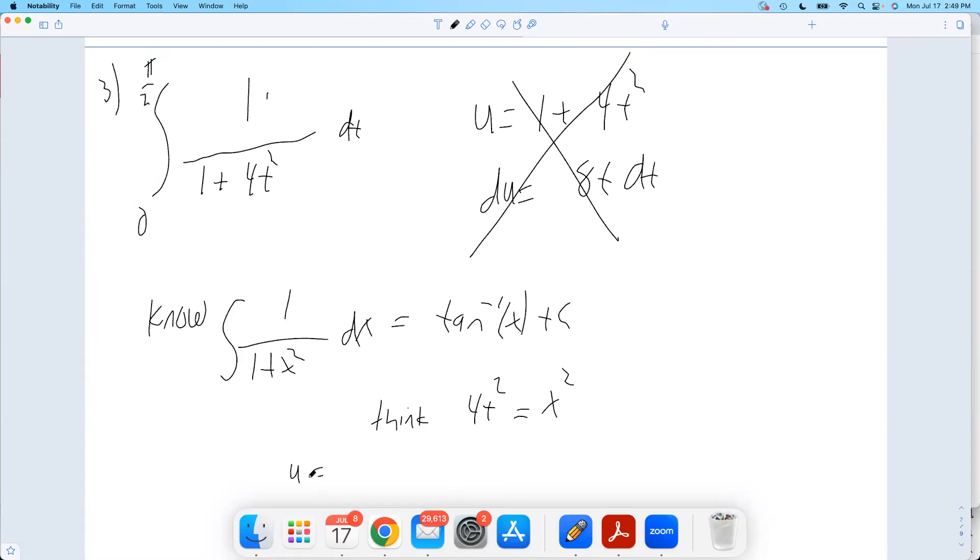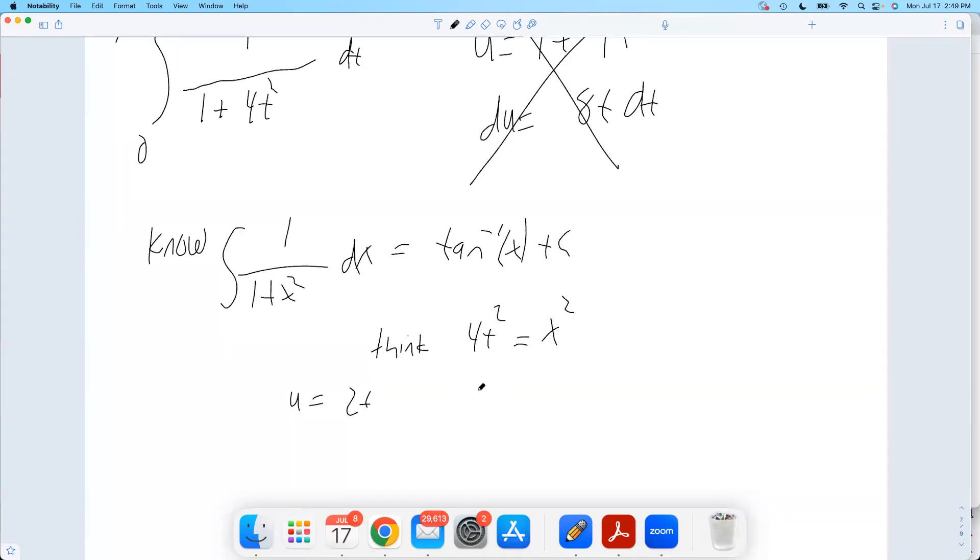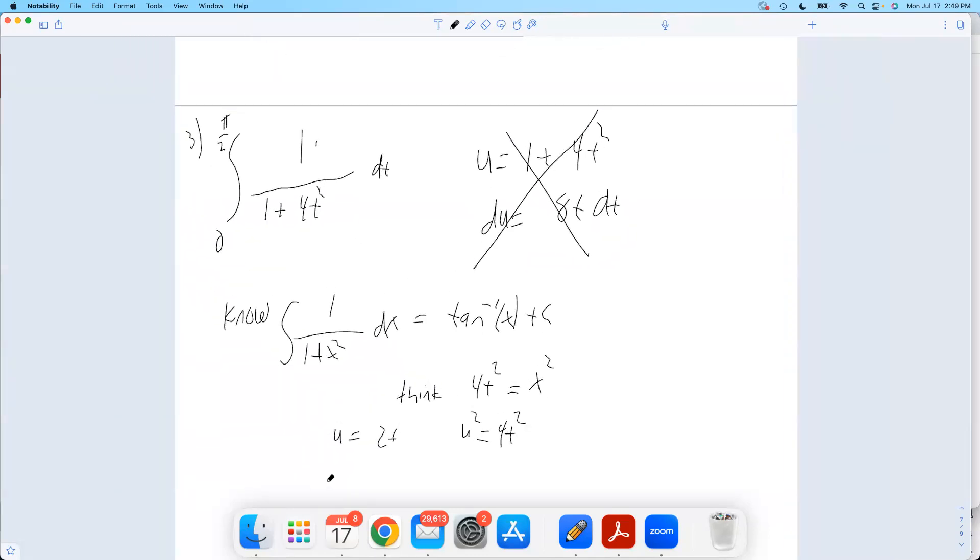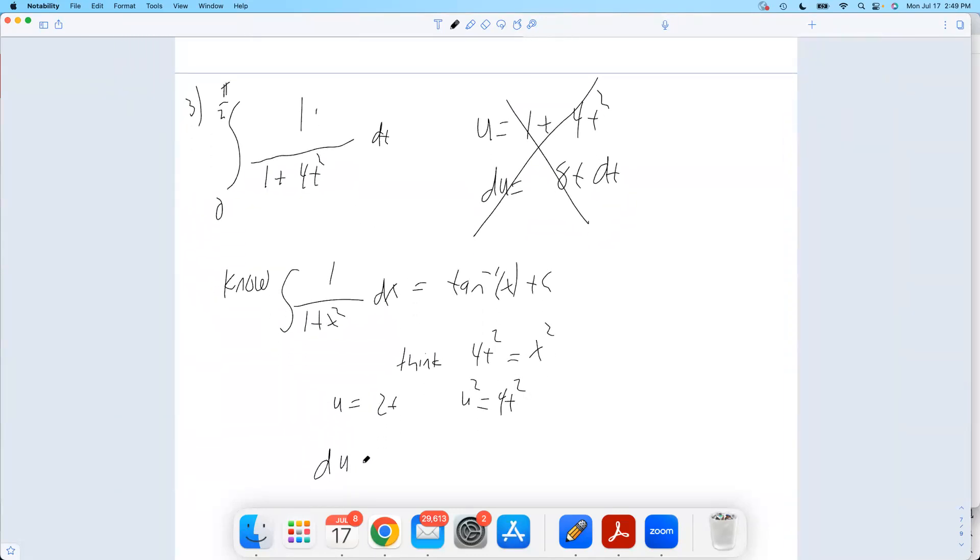Now, then, maybe if we tried u is 2t, then what would u squared be? Okay. This looks like this might work. So I could have that be like a 1 plus u squared. Okay, we're on the right track. So if u is 2t,